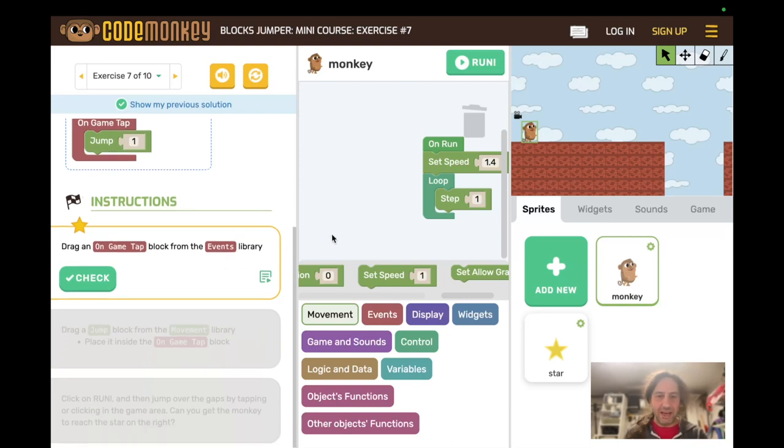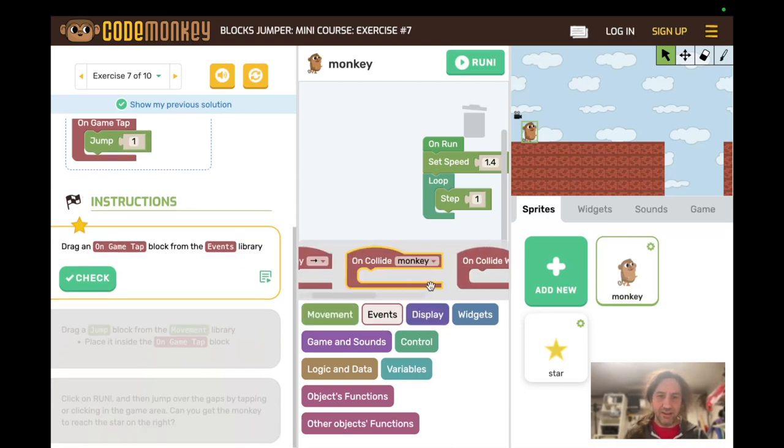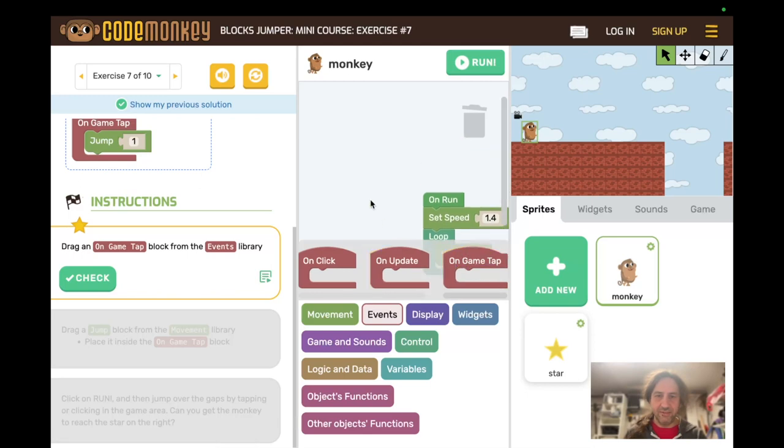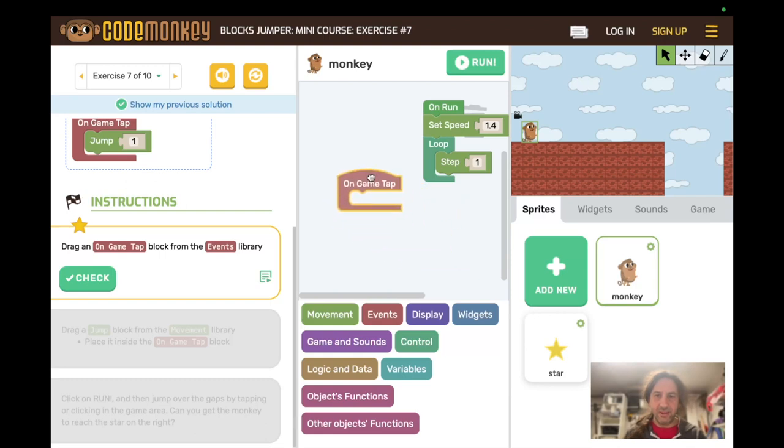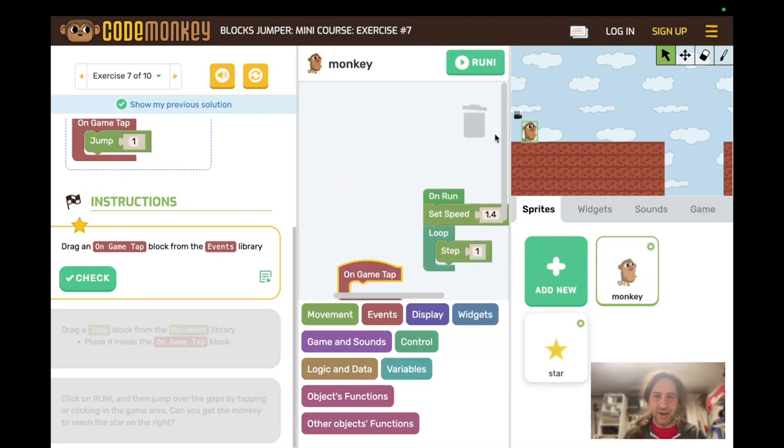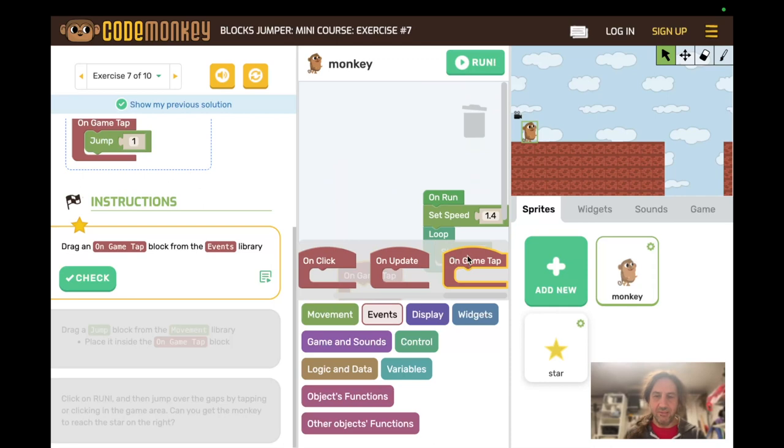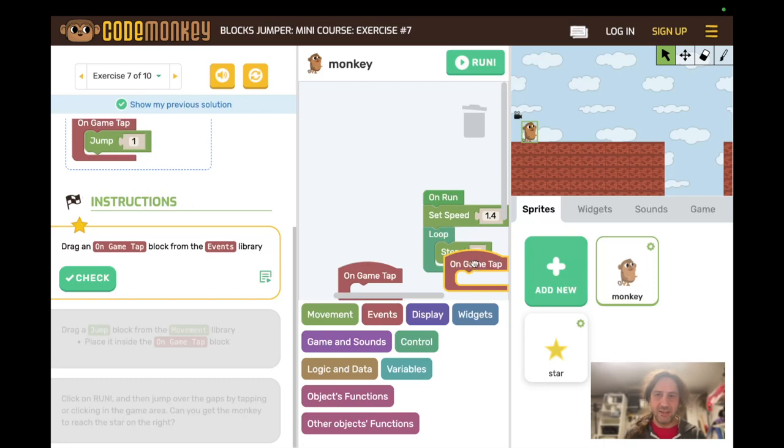Now, on game tap. From the events library. Again, scroll, scroll, scroll. Last one here. And we're still doing this on the monkey sprite. It is not letting me drag that. Let's see. Okay. So it was not letting me drag when the piece was over, oh, now it is, when the piece was over the other blocks. Or at least that's what it felt like. So that could be a random little problem. Check.